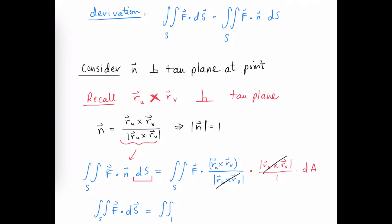We end up with a double integral over the domain region D, which is the domain of the parametric equations for the surface. The integrand is the vector field evaluated at those parametric equations, dotted with the cross product dA. This is what we use to calculate the flux when our surface is defined parametrically.